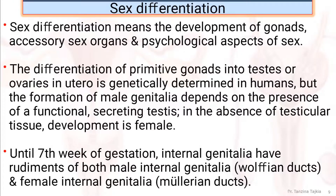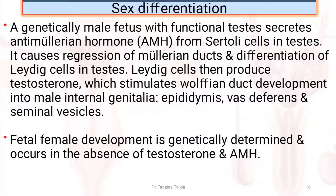Until the 7th week of gestation, internal genitalia have rudiments of both male and female internal genitalia. A genetically male fetus with functional testis secretes anti-Müllerian hormone from Sertoli cells in the testis. This causes regression of the Müllerian duct and differentiation of Leydig cells in the testis.